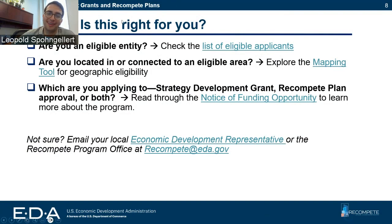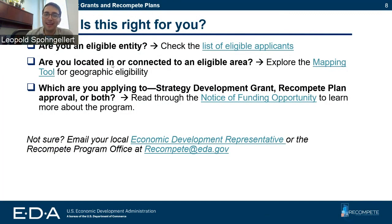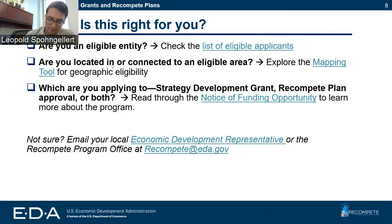There's a list of eligible entities on our website, and we will send these slides out to everyone on this call. Are you located in or connected to an eligible area? This program is based on prime age employment rates and median income requirements provided by Congress, so please make sure to go to our website, where you will find a map that will help you determine if you are in eligible geography. You also need to determine if you're going to apply for a strategy development grant, recompete plan approval, or both.